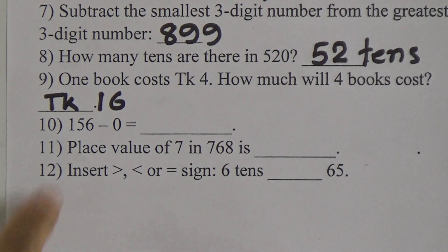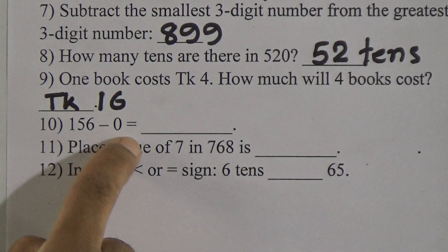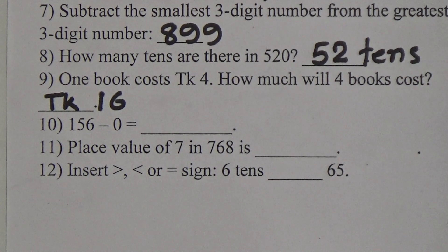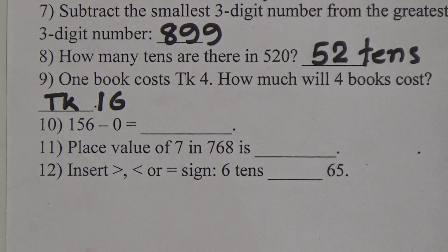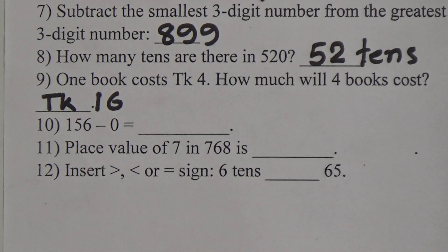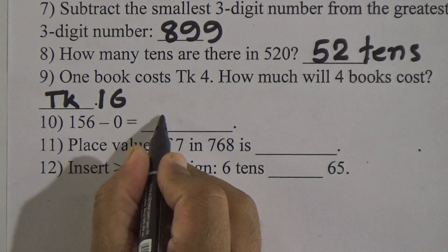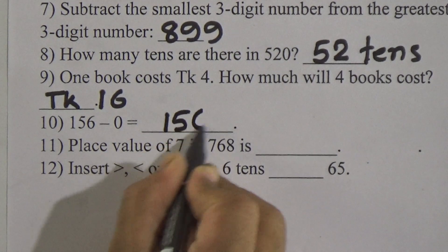Question number 10: 156 minus 0. When we subtract 0 from any number, the number remains unchanged, because 0 means nothing. So 156 minus 0 equals 156.